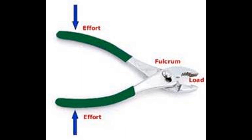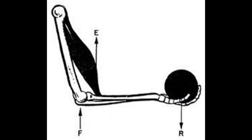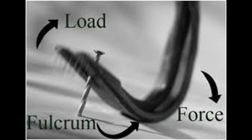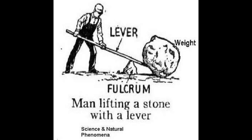A pliers — we apply the effort on the part that we hold, the fulcrum is the part that holds the machine together, and the load is whatever the machine will hold. Here is a well-known example used in PSC — the arm: you have the effort which is the muscle, the fulcrum which joins the arm together, and the hand which holds the load, in this case a ball. In another example you have the fulcrum holding the machine together, the force is the part we pull on, and the load is the nail. Here you have a lever that a man is holding, the fulcrum is the part holding the lever, and the load is the weight of the stone.